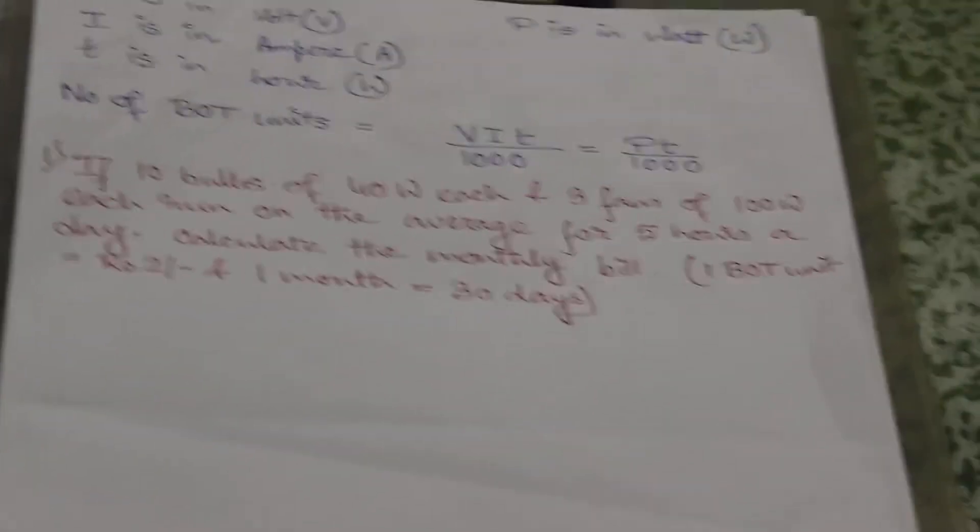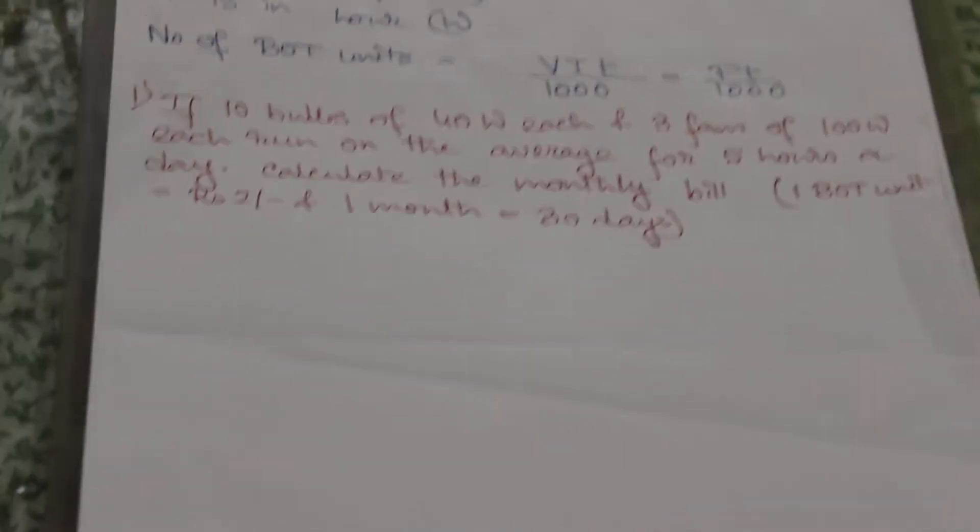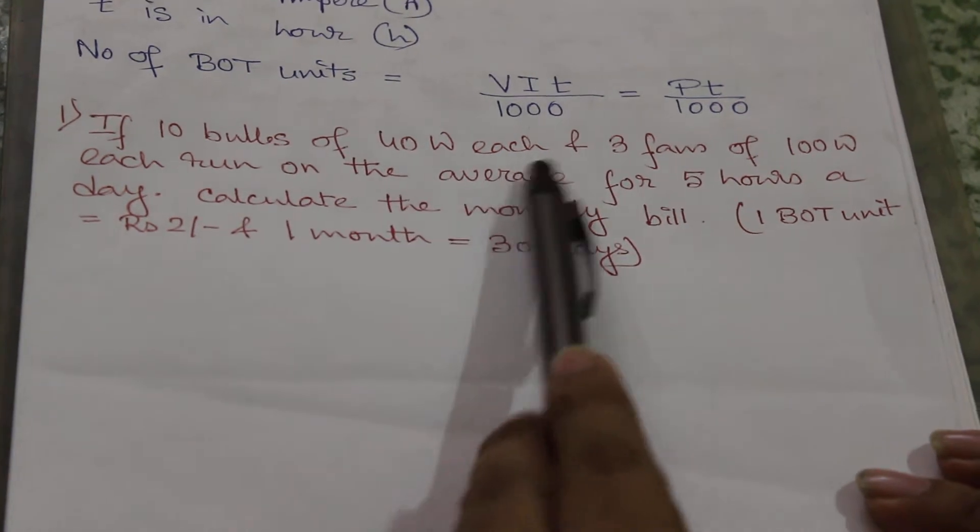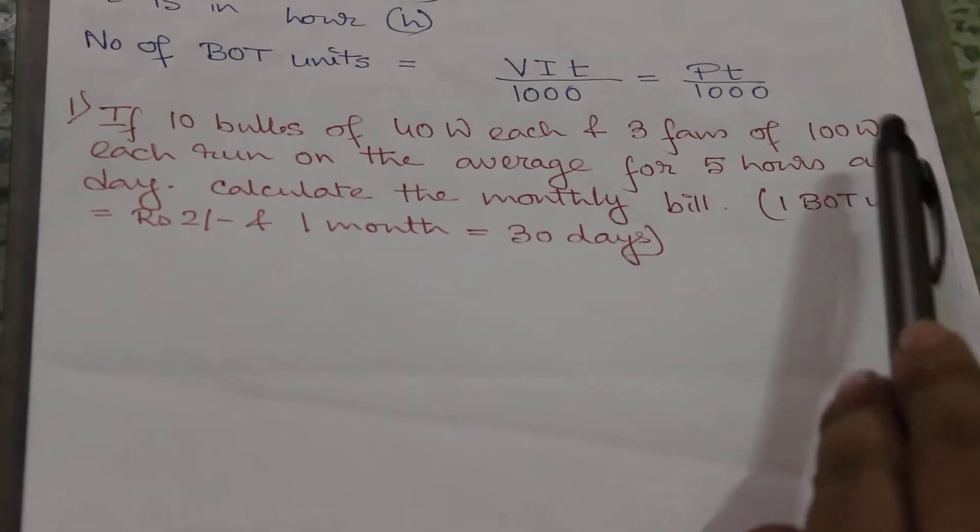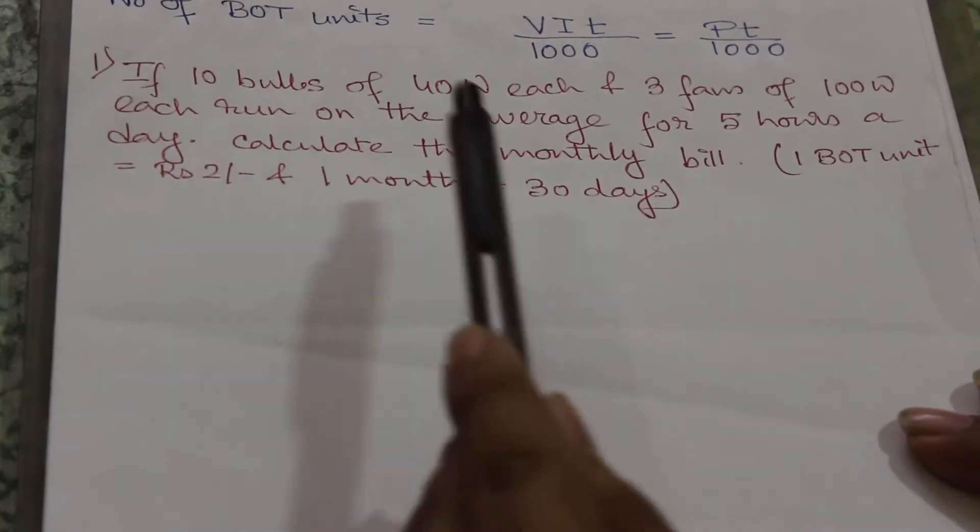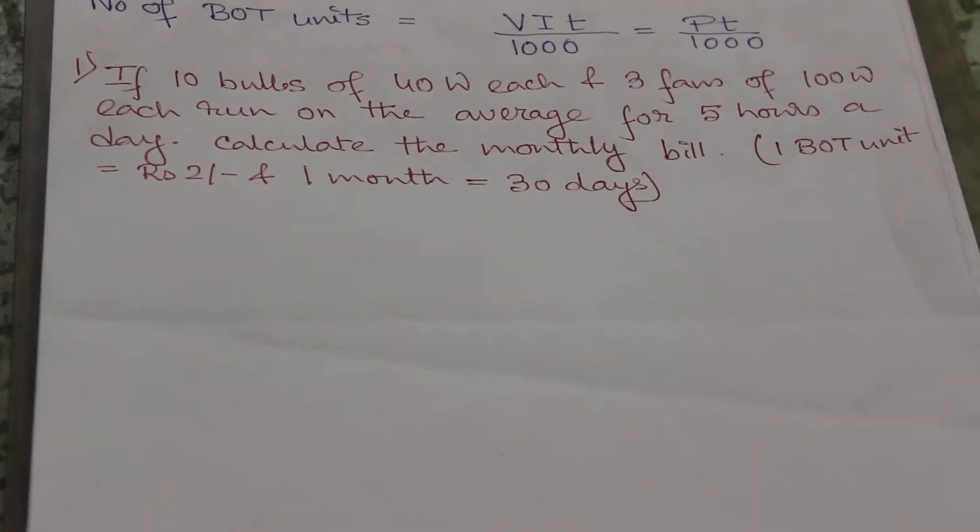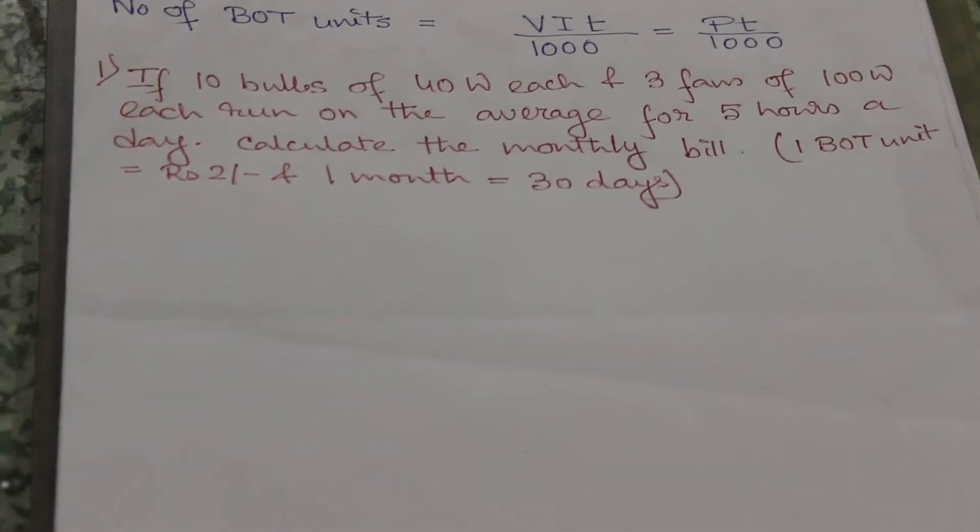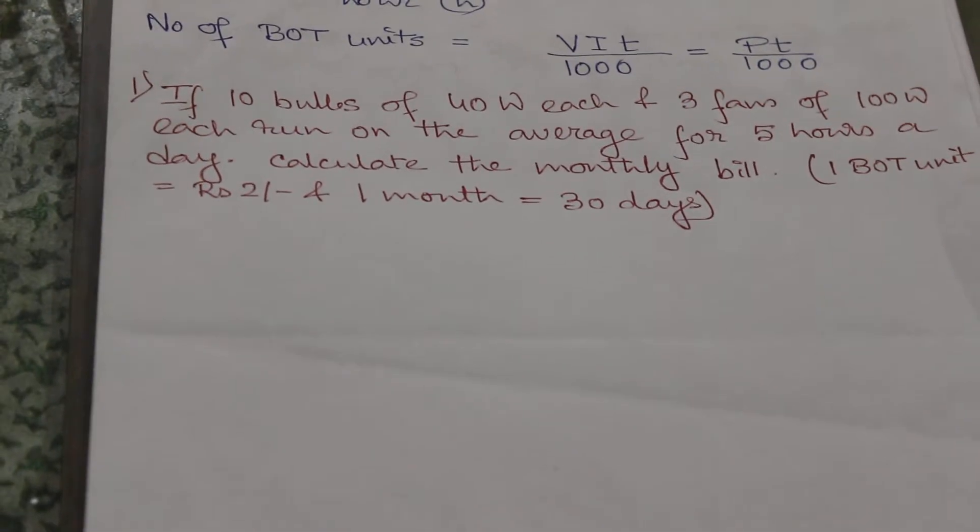So let us discuss with some examples. If 10 bulbs of 40 watt each and 3 fans of 100 watt each run on average for 5 hours a day, calculate the monthly bill if 1 BOT unit is Rs 2 and 1 month consists of 30 days.